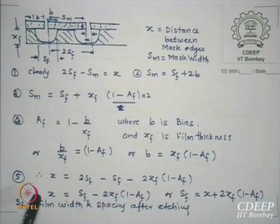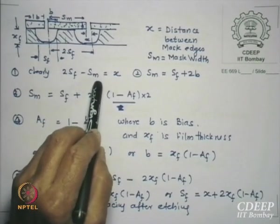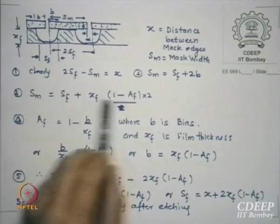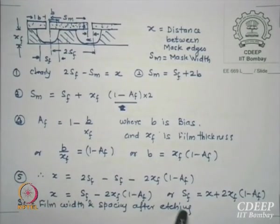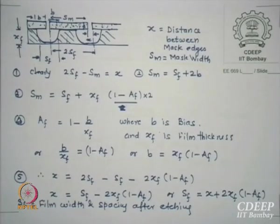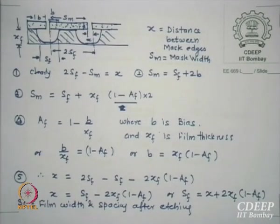From here I can get: X equals 2SF minus SM. Substituting SM with the expanded expression, I get: X equals SF minus 2XF(1 minus AF). What are we trying to say? The ideal etching we are looking for is SF should be the same as X. So if AF equals 1, X is exactly the edge-to-edge distance you want — the same etching will happen. If AF is not 1, whatever you wanted will be different — it will be larger than X and some additional window will be opening.